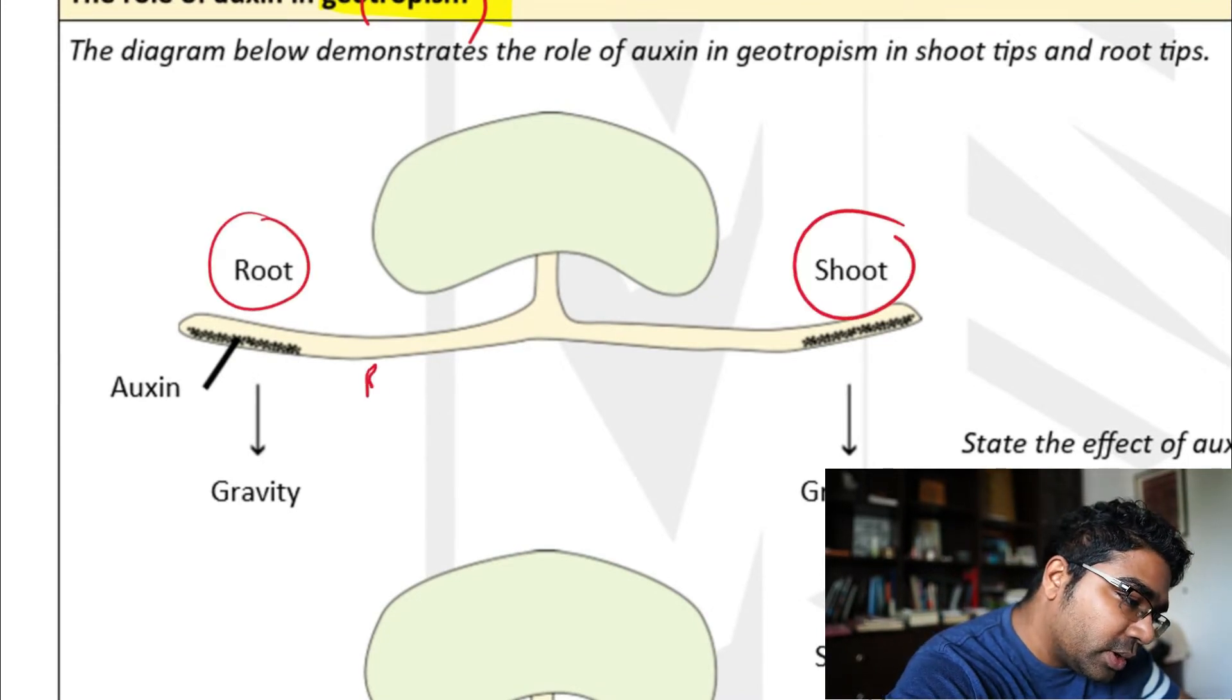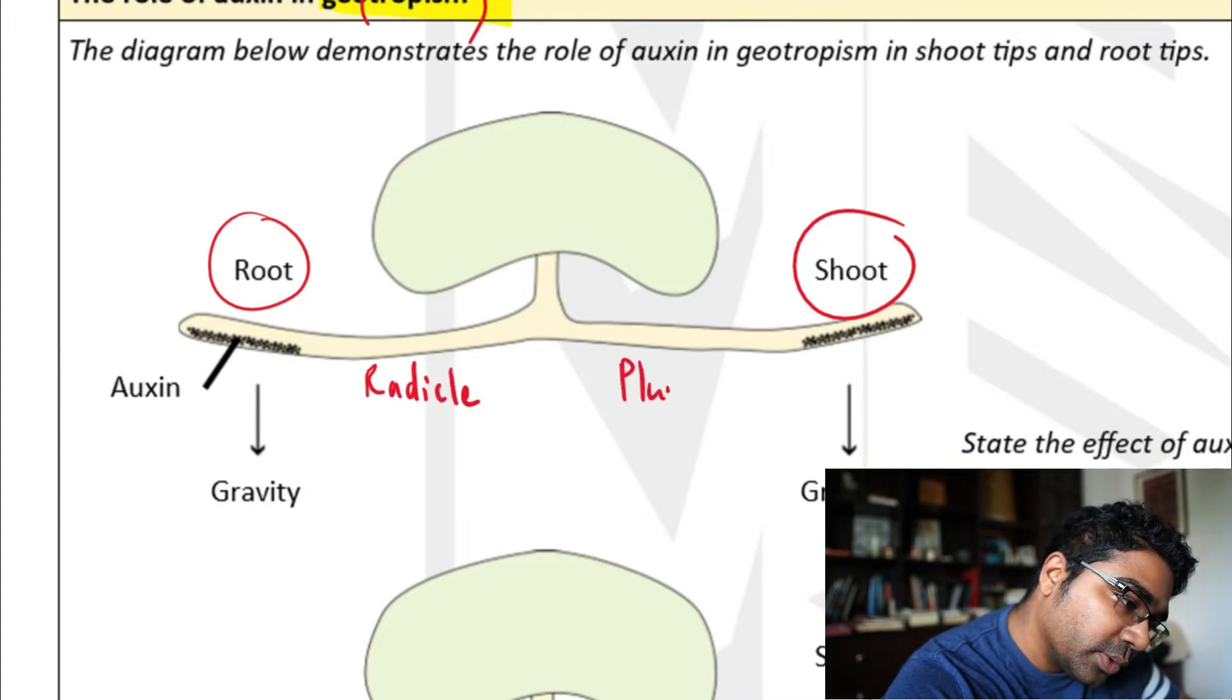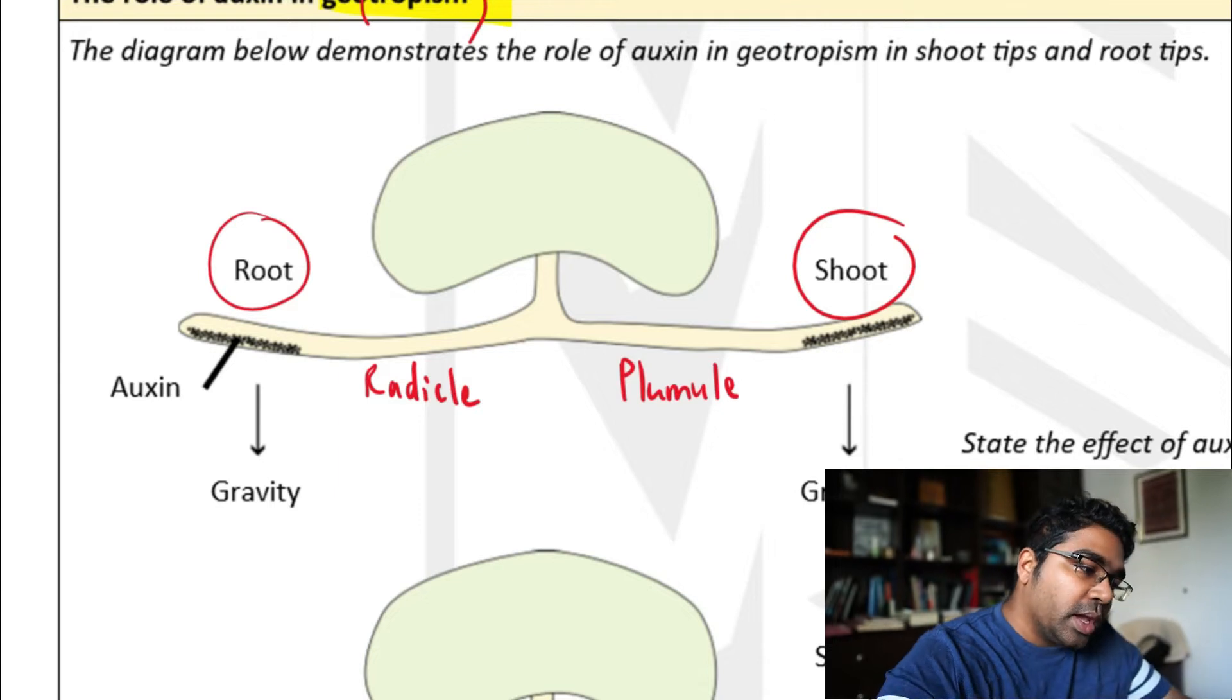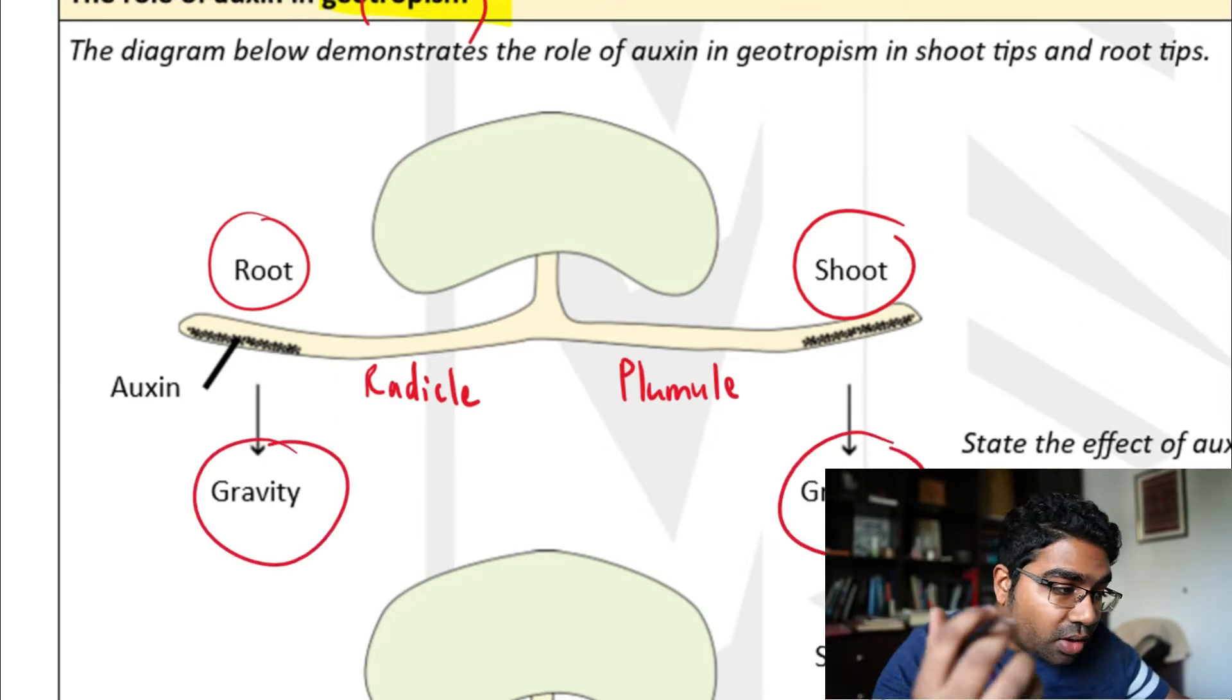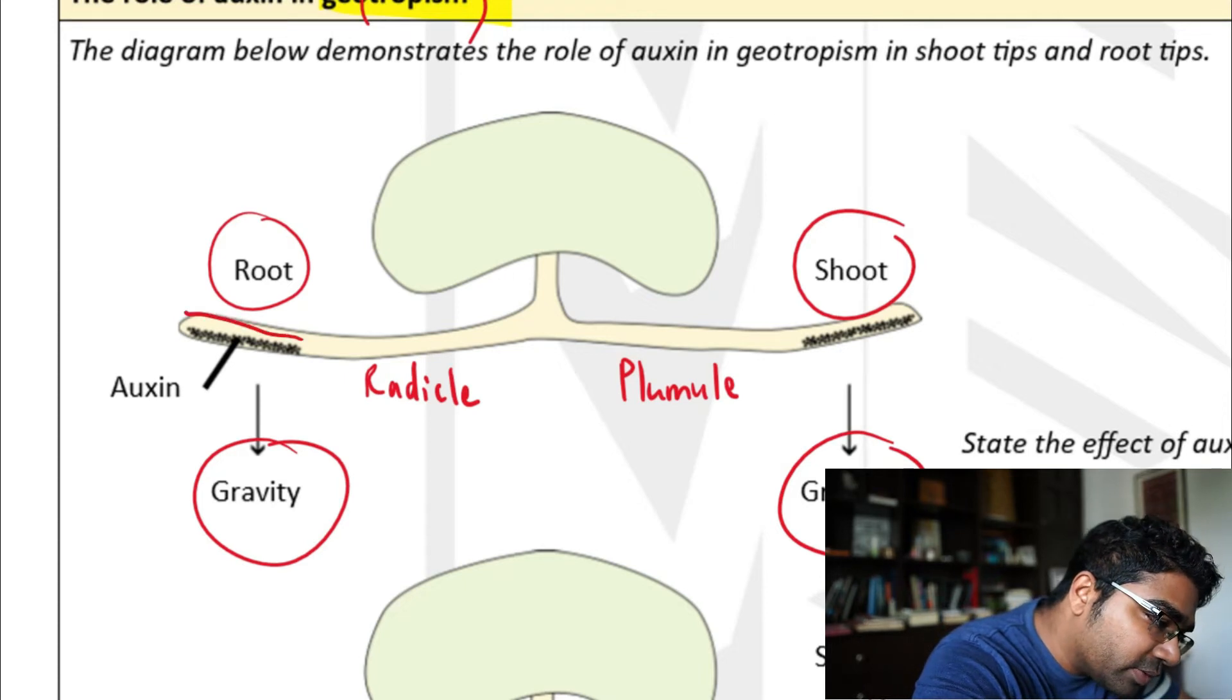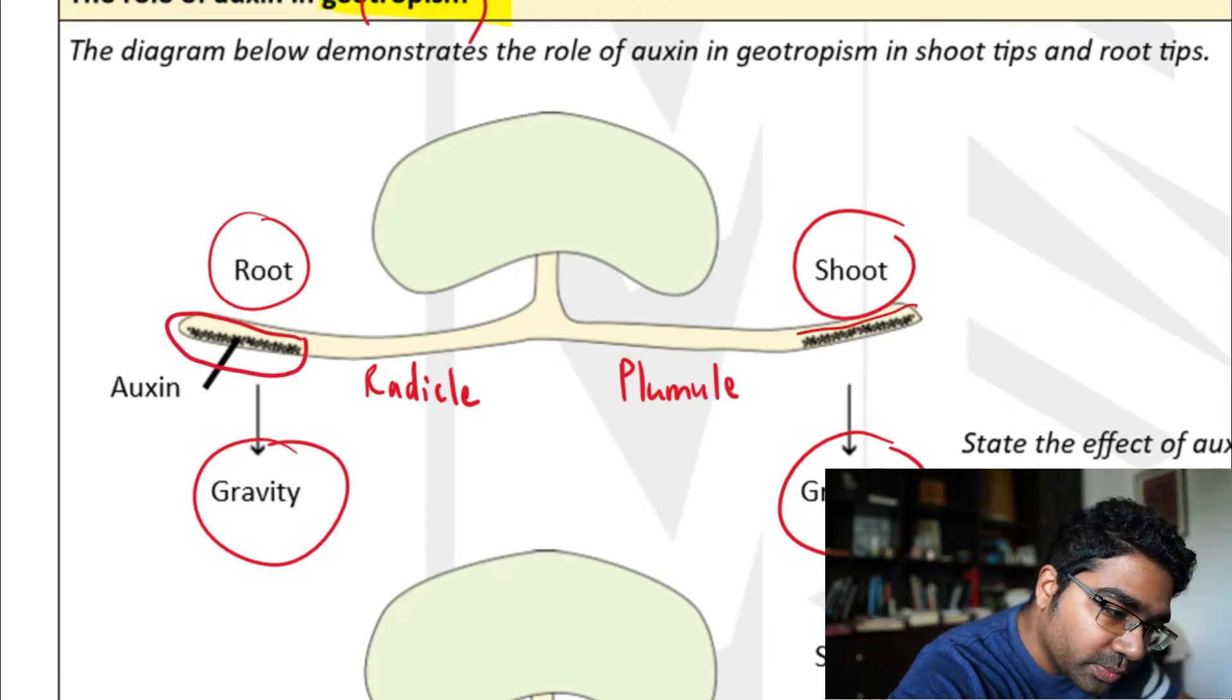The young root is called the radicle, and the young shoot is called the plumule. Due to gravity acting downwards, all the auxin is pulled to the lower part of the radicle and the plumule. Auxin has a different